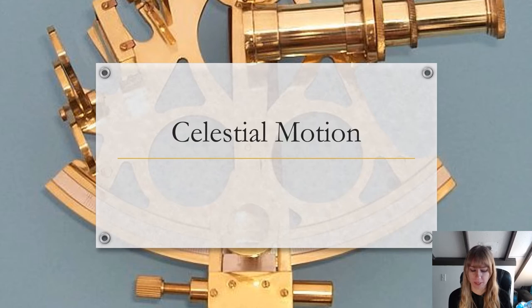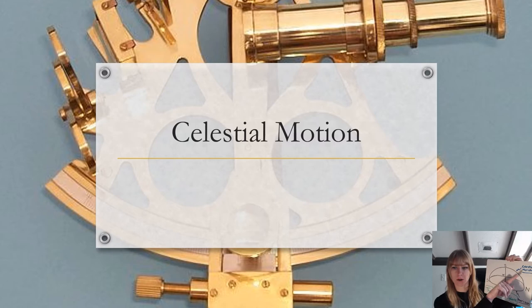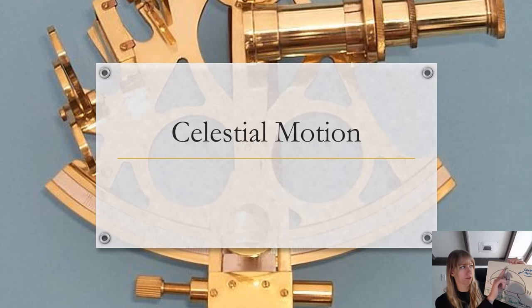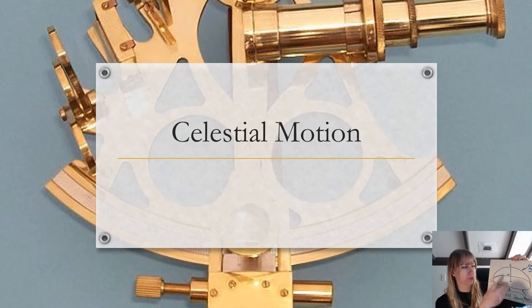All right guys, so last time we learned about the celestial sphere, we learned about what azimuth is and altitude. For example, azimuth is direction, whether you're to the right or the left of the zenith. If you are on the celestial meridian, remember this is your celestial meridian. If it's between the zenith and this point it's in north, if it's between the zenith and this point it's in south.